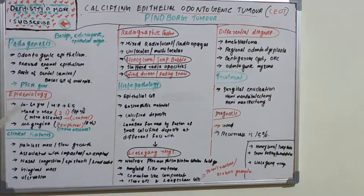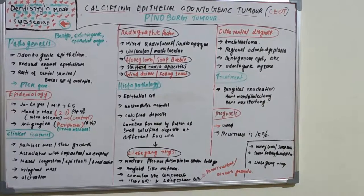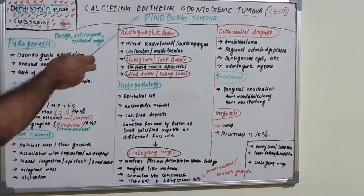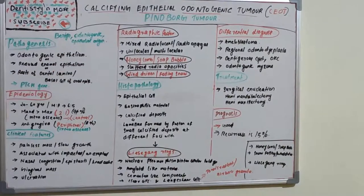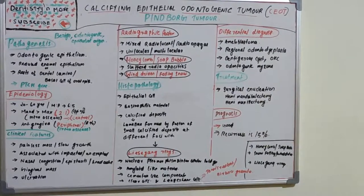It has a peculiar amyloid material which may become calcified over a period of time, and it was first described by Dr. Jens J. Pindborg. Now let's move on to the pathogenesis.